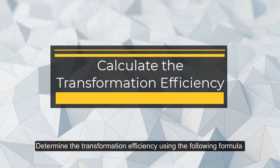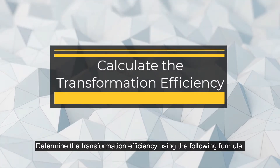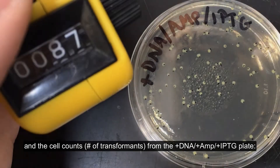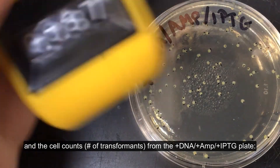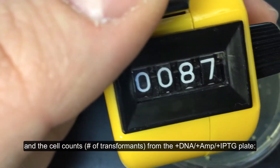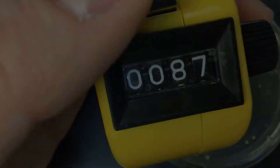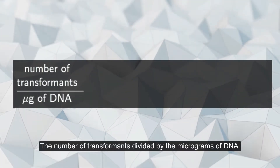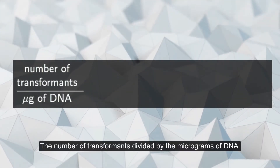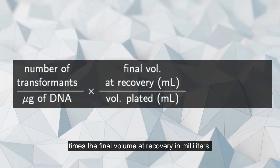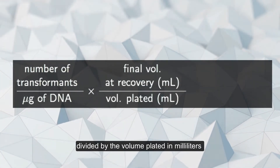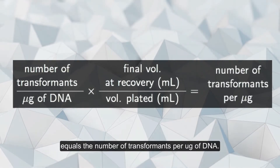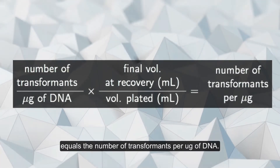Determine the transformation efficiency using the following formula, where the cell counts are the number of transformants from the plus-DNA plus-AMP plus-IPTG plate. The calculation is: number of transformants divided by micrograms of DNA, times the final volume at recovery in milliliters, divided by the volume plated in milliliters — this equals the number of transformants per microgram of DNA.